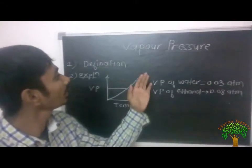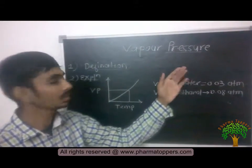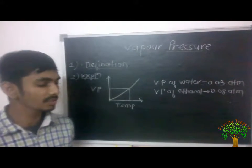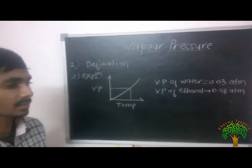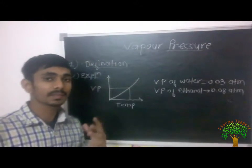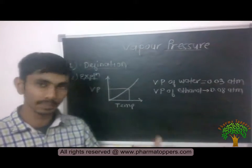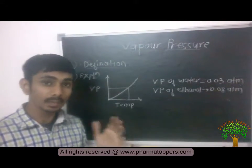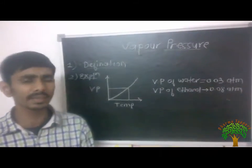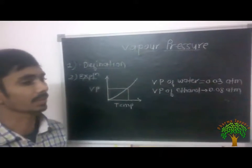Today we are going to discuss Vapour Pressure. Vapour Pressure is defined as the pressure exerted by the gas which is in equilibrium with the solid and liquid in a closed container at constant temperature, or at any given temperature. It is called Vapour Pressure.